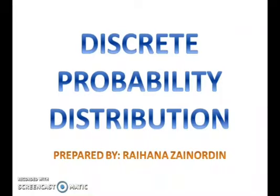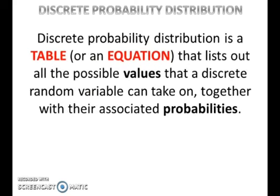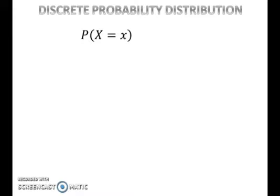A Discrete Probability Distribution is a table or an equation that lists out all the possible values that a discrete random variable can take on, together with their associated probabilities. The probability of a discrete random variable equaling a certain value can be written as P(X = x), or as a function of x.